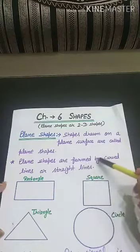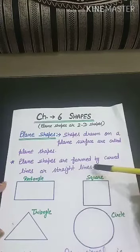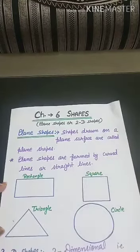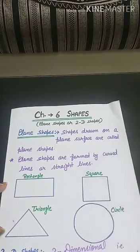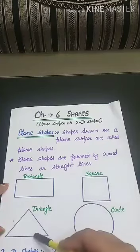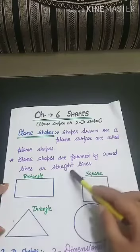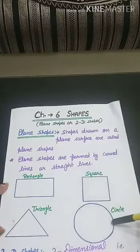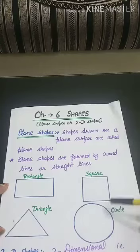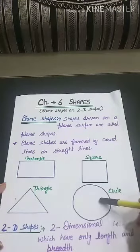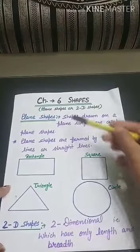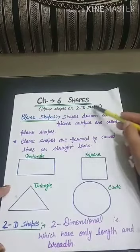Plane shapes are formed by curved lines or straight lines. For example, rectangle, square and triangle are made using straight lines, and circle uses curved lines. You will have studied about these shapes in your previous classes. And plane shapes are also called 2D shapes.